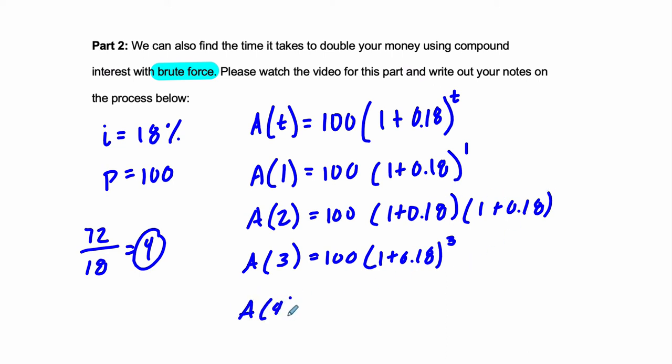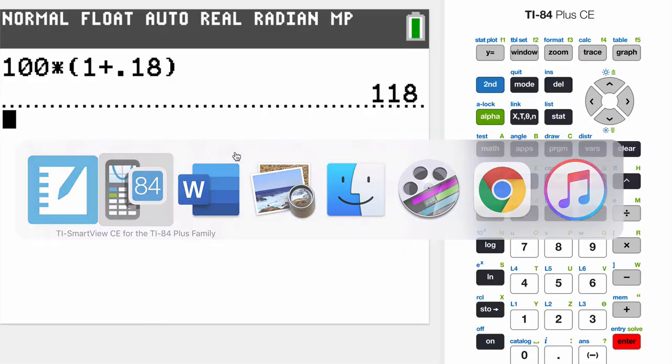And then, as you probably guessed, for the fourth year, it's going to be 100 times 1 plus 0.18 to the fourth. And that should be close to 200, which we'll see in a moment. So I'm just going to enter all of these in here. So you can see what would happen if you were tracking it year by year. Brute force just means you're going through the process step by step, piece by piece. So we'll do that.